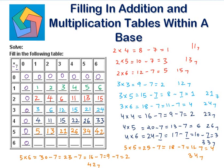Now with 6: 6 times 1 is 6. 6 times 2 is 12, and 12 is 15 in base 7. 6 times 3 is 18, and 18 is 24 in base 7. 6 times 4 is 24, and 24 is 33 in base 7. 6 times 5 is 30, and 30 is 42 in base 7.